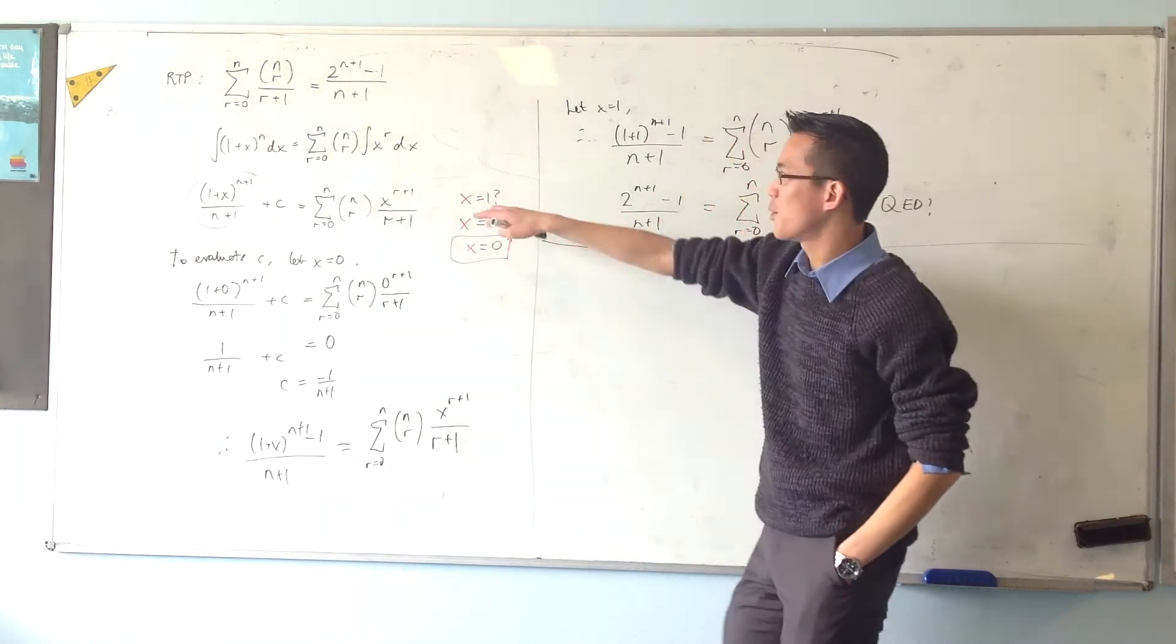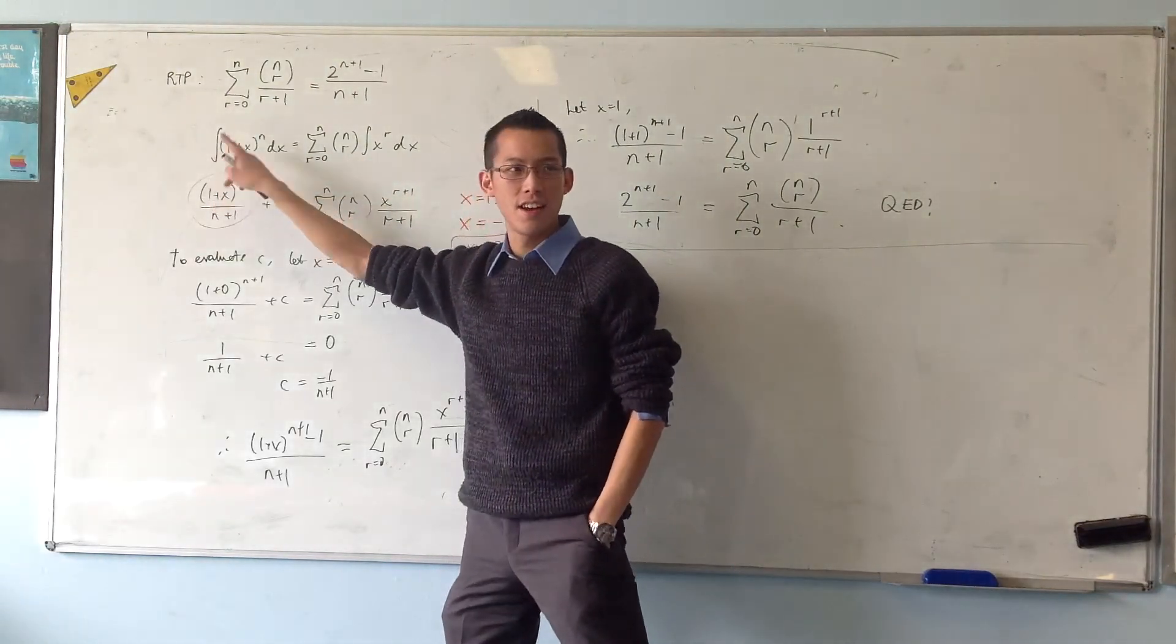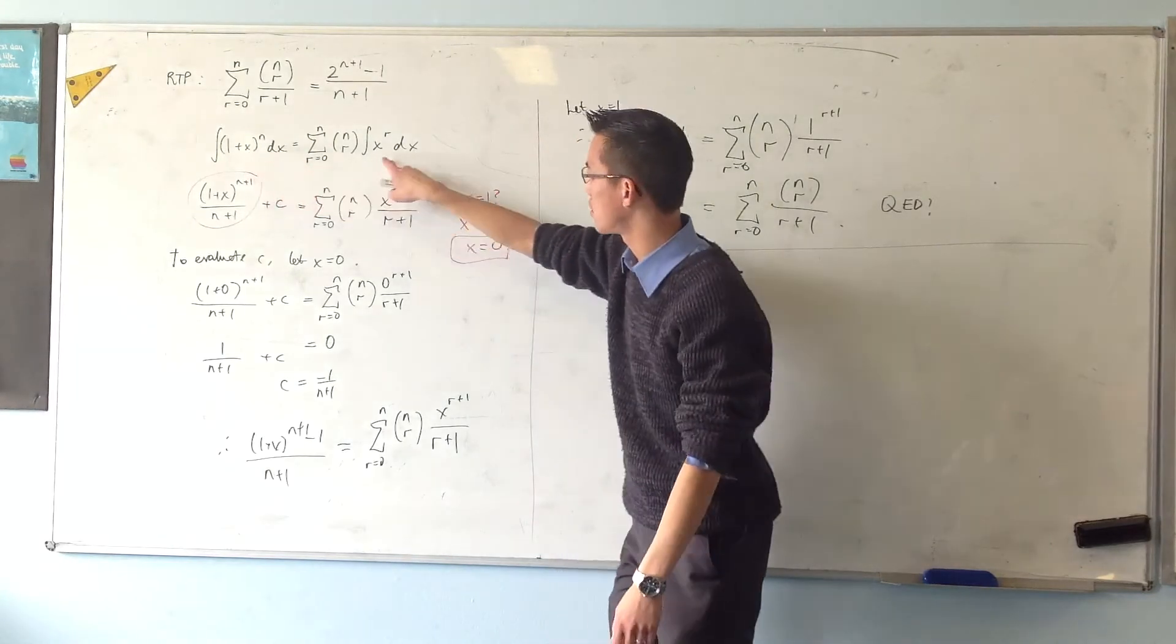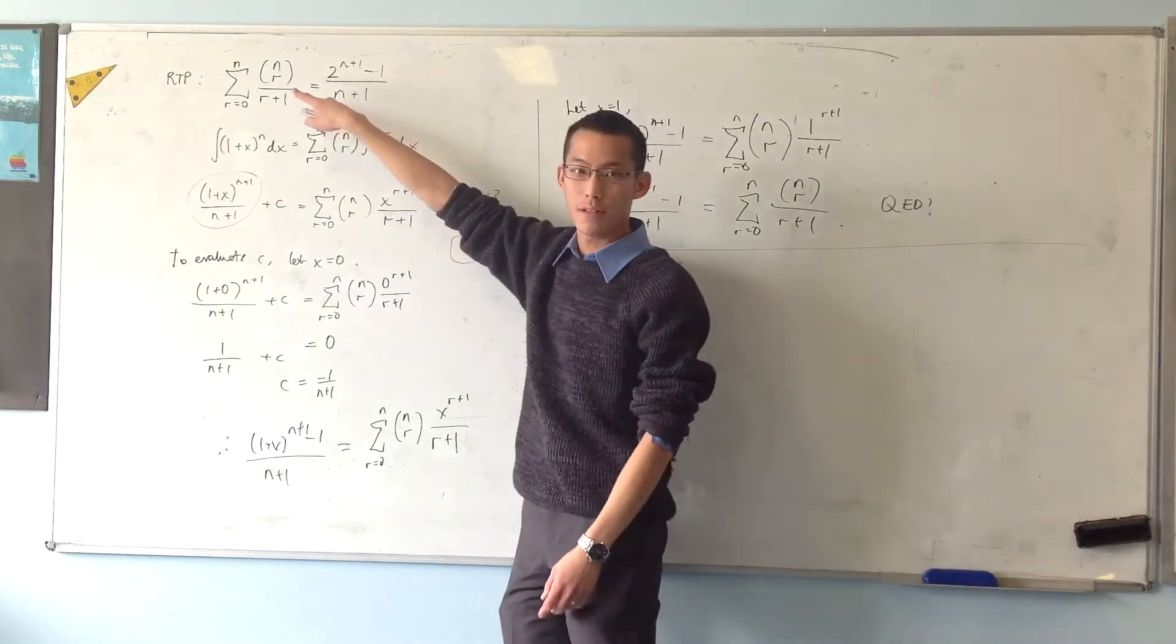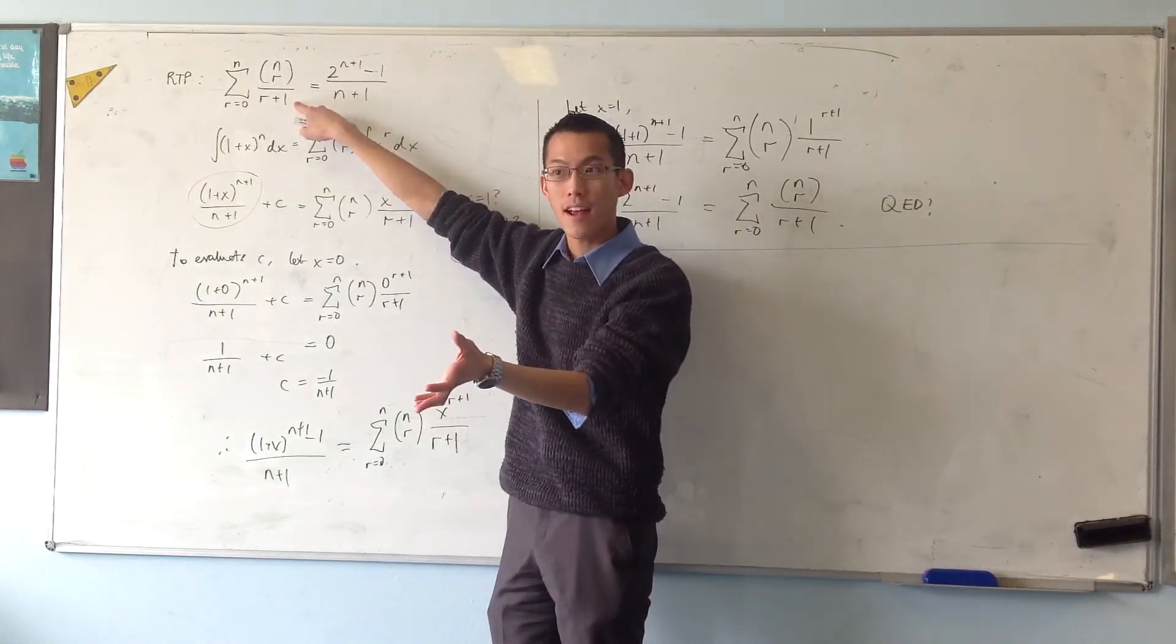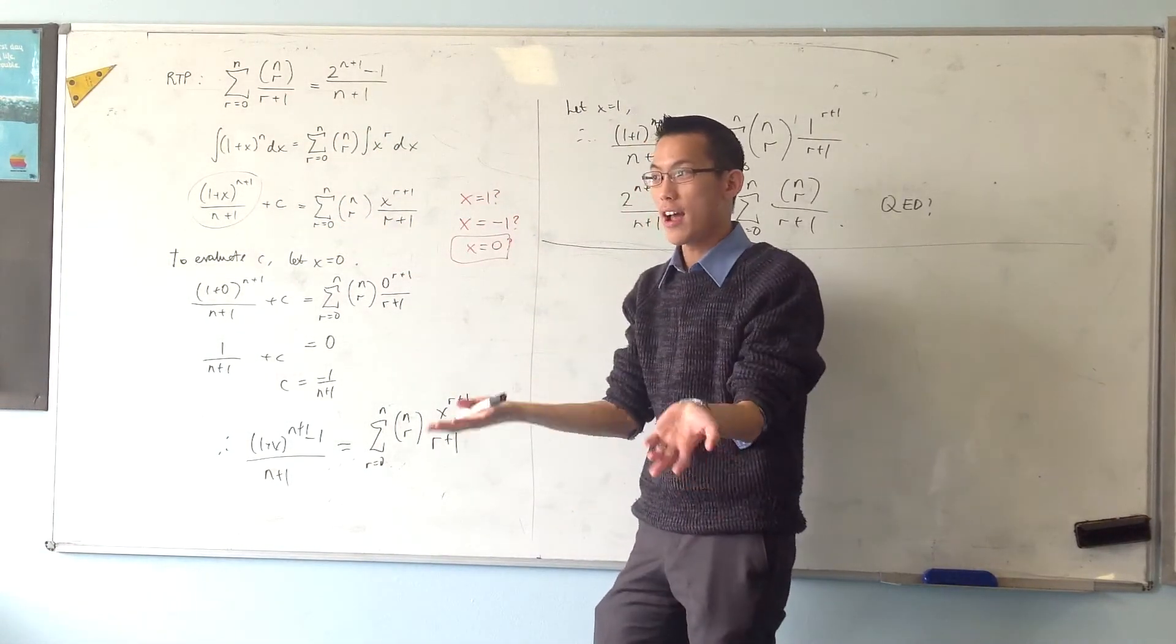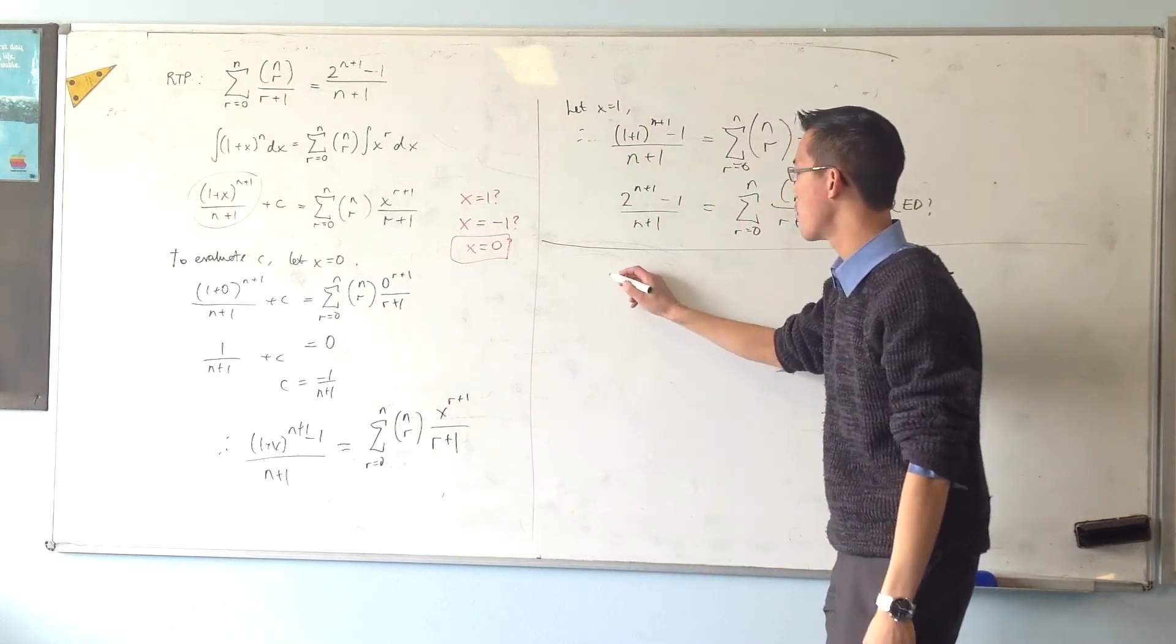And the thing is, we're bringing integration in here, not because the question is like, find the area, blah, blah, blah. It's because we can connect what we know, this binomial identity, to an identity that I want to prove, right? So, I integrate with respect to x because I wanted to. In the same way, I can integrate over a certain domain, because it's convenient to me.